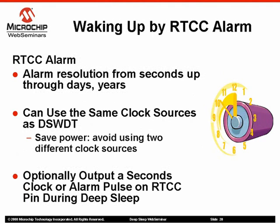The real-time clock calendar can keep a running clock of the current date and time, plus it has an alarm feature that can be used to wake the microcontroller from DeepSleep at a specified day and time. Unlike the DeepSleep Watchdog timer, granularity is not restricted to 16 options — any day and time can be used. The internal low-power RC oscillator or the secondary oscillator can be used for the clock source, just like the DeepSleep Watchdog timer.